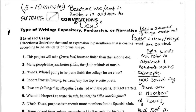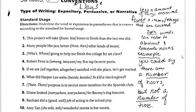In my sloppy handwriting, I've attempted to write the differences between words you may not even know have a difference. Without a resource, most people — most college students, most adults — would have to look these up. If nobody's ever told you: beside means close or next to, while besides means in addition to.